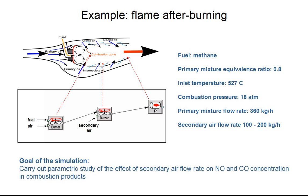To model the main flame, we apply the well-stirred reactor model, which simulates combustion in the recirculation zones. The secondary air-fuel mixture is modeled also with the well-stirred reactor. The post-flame zone is modeled with the plug-flow reactor. The pressure in the combustion chamber is 18 atmospheres, the temperature at the inlet is 800 Kelvin, and the mixture is lean with an equivalence ratio of 0.8.